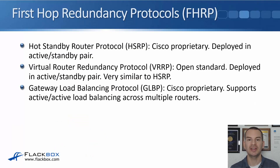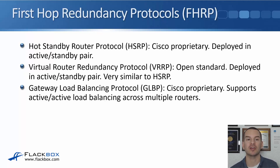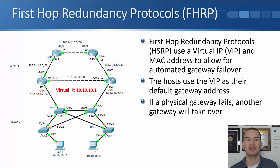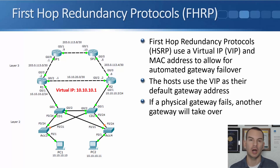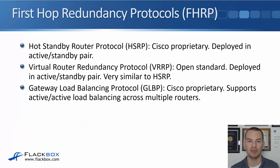The different First Hop Redundancy Protocols we have are: first, HSRP — the Hot Standby Router Protocol. This is Cisco proprietary, and it's deployed in an active/standby pair. If R1 is the active router, R2 will be standby only, so all traffic always goes through R1. If R1 fails, it will then fail over to R2. HSRP is an active/standby configuration, and in a Cisco environment it is the most commonly used First Hop Redundancy Protocol.